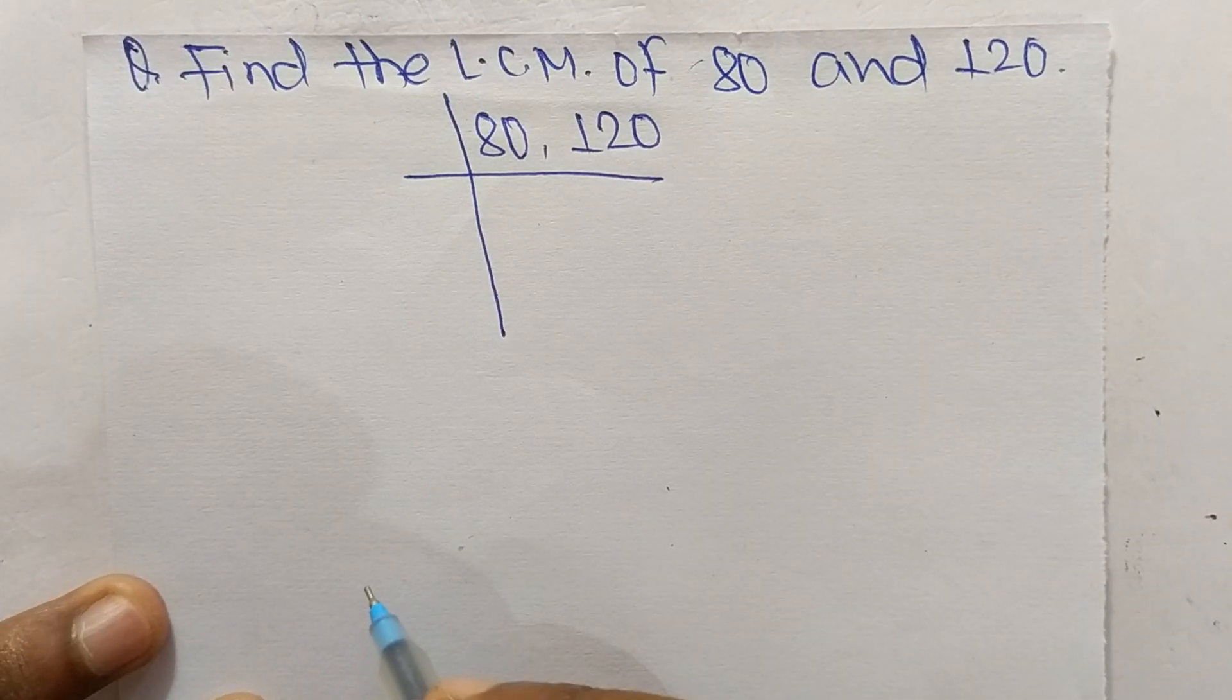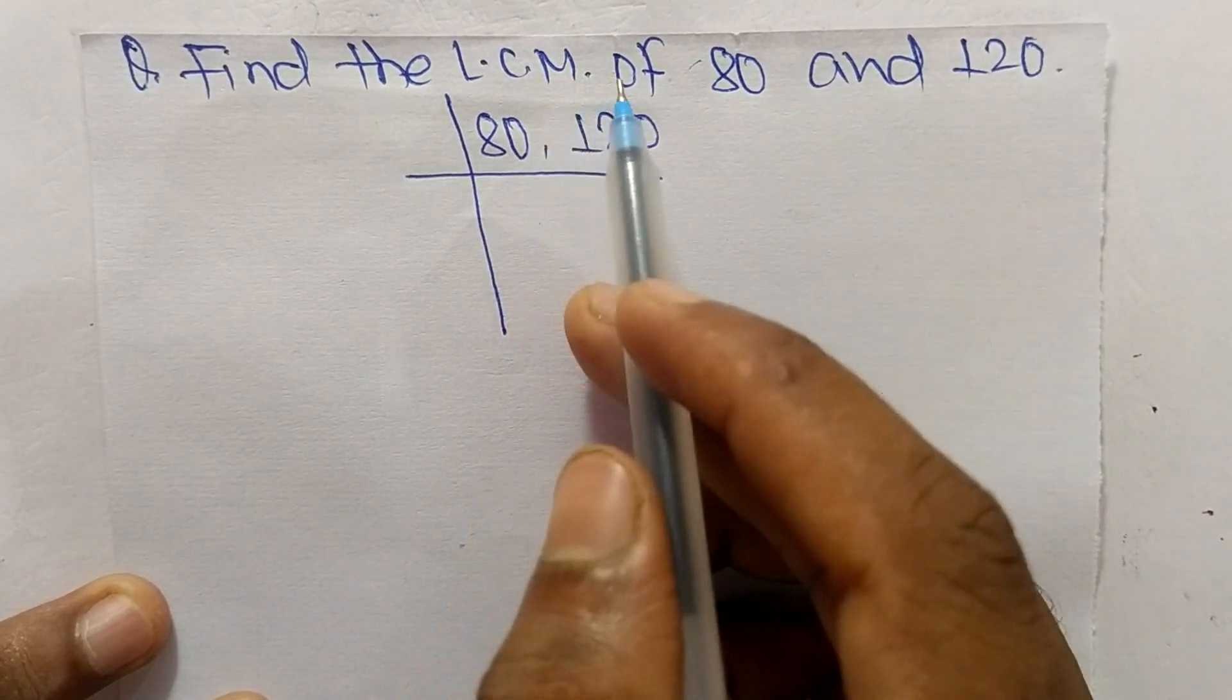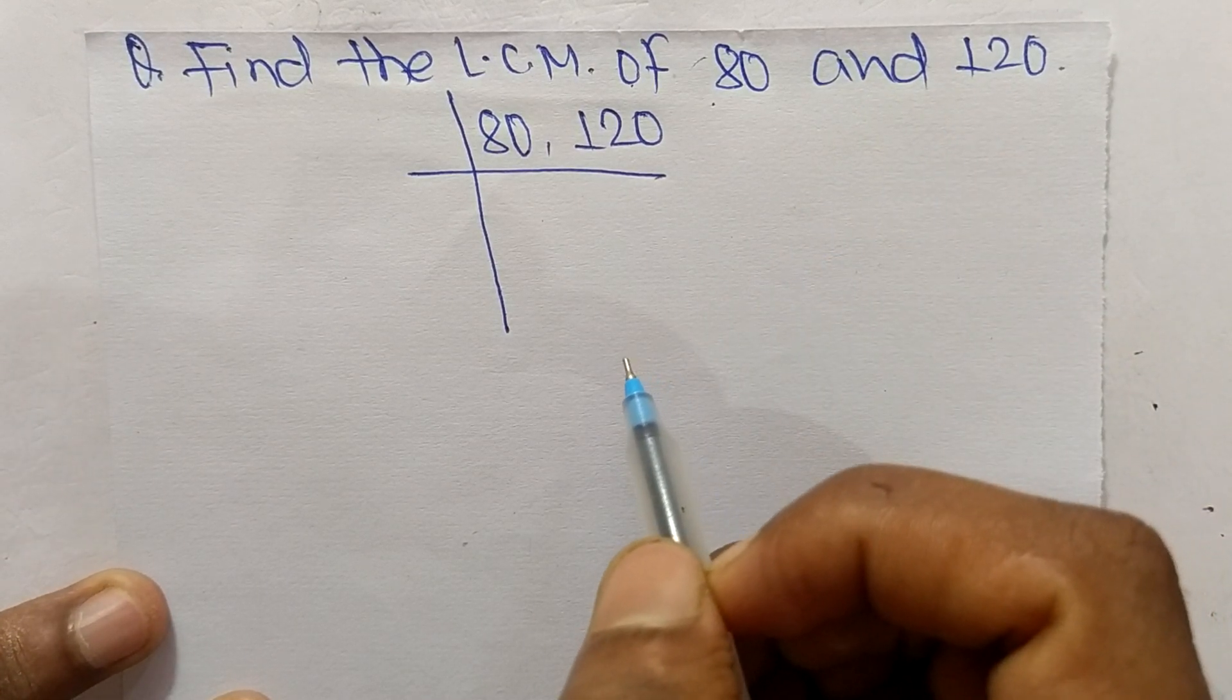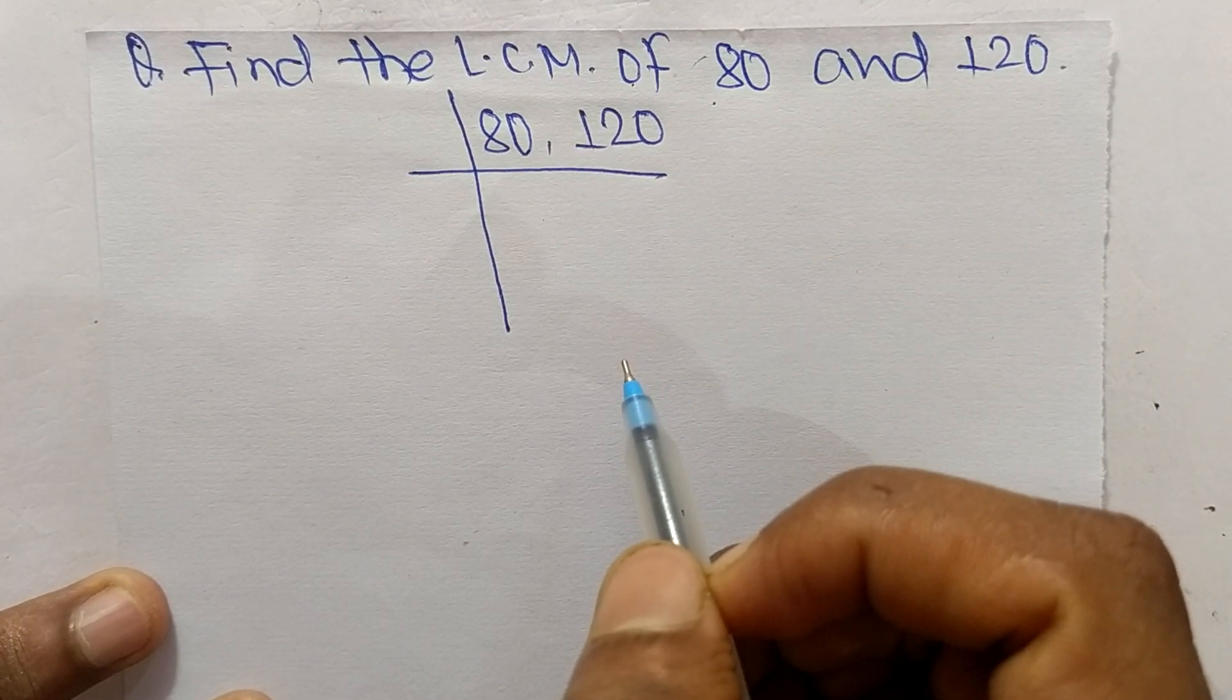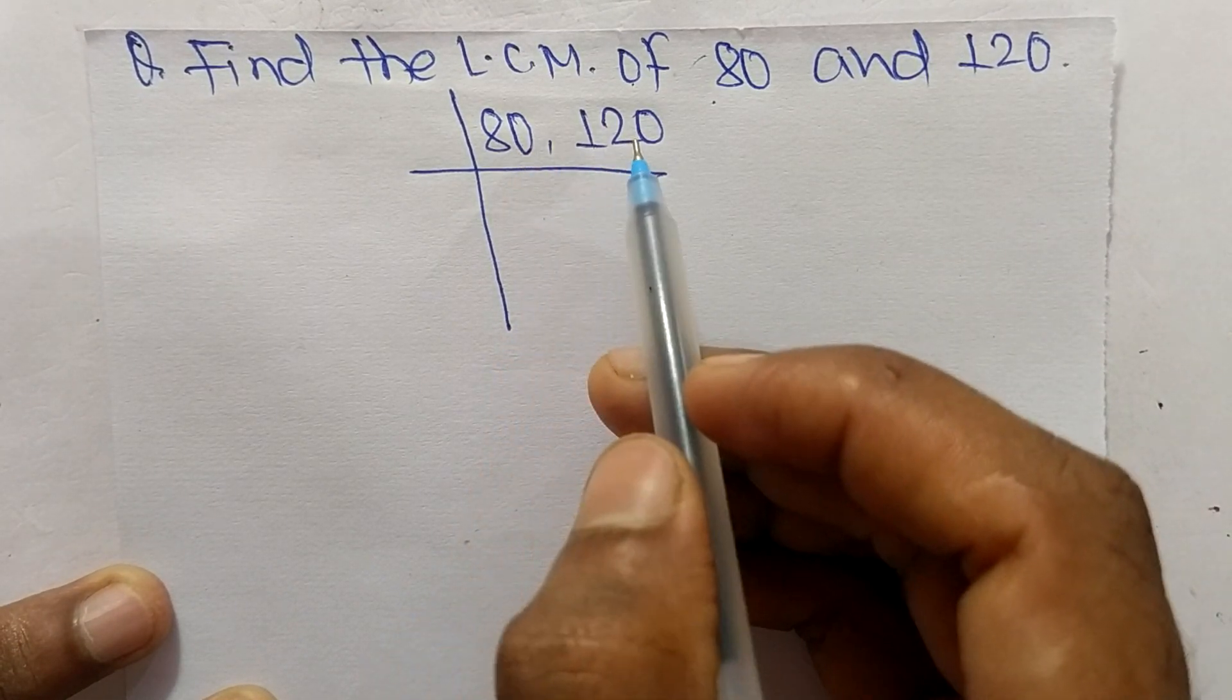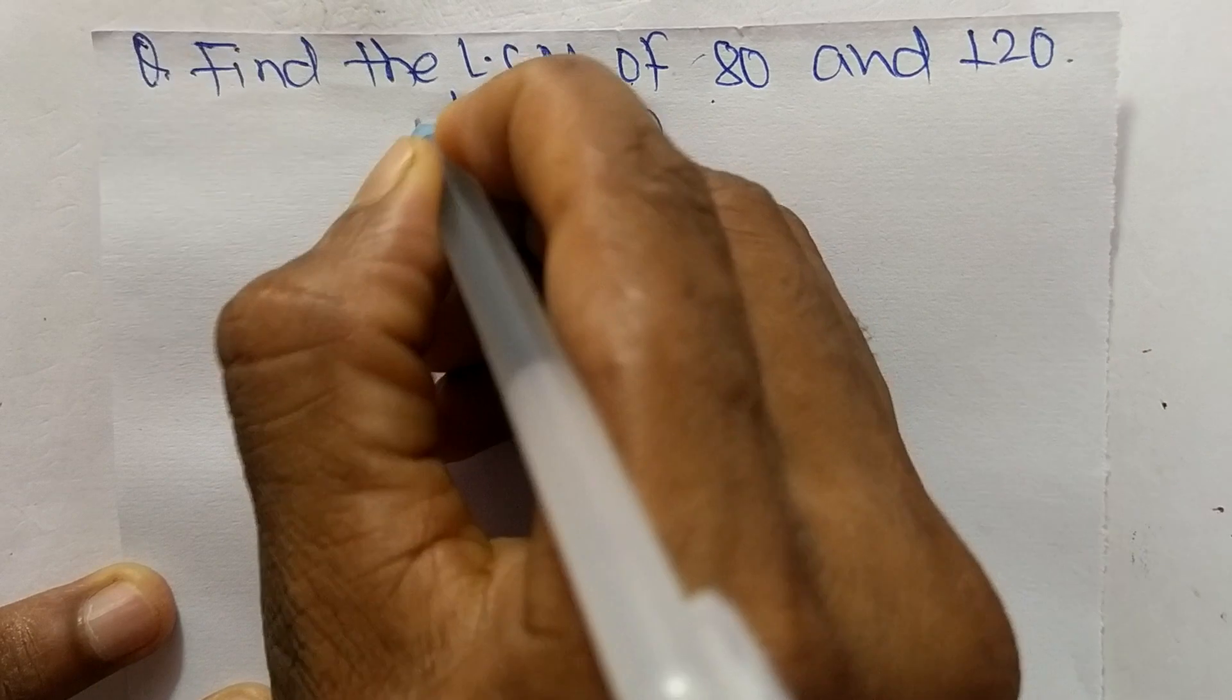Today in this video we shall learn to find the LCM of 80 and 120. To find the LCM, first of all we choose the lowest number that can exactly divide 80 and 120. So the number is 2.